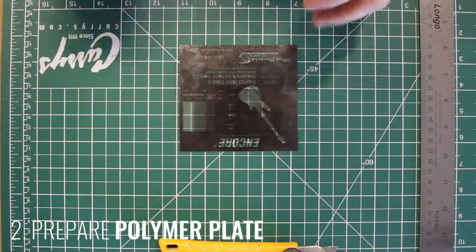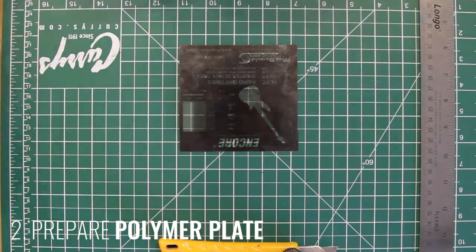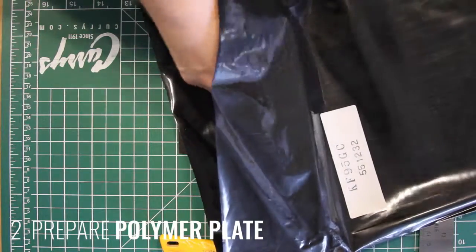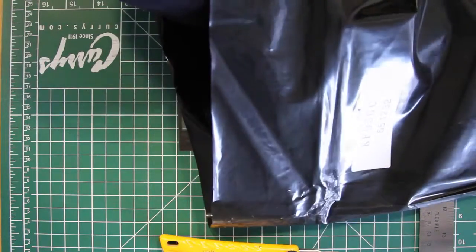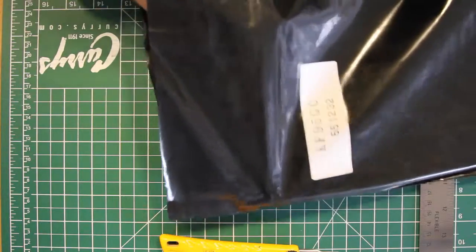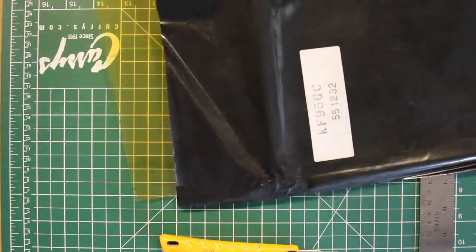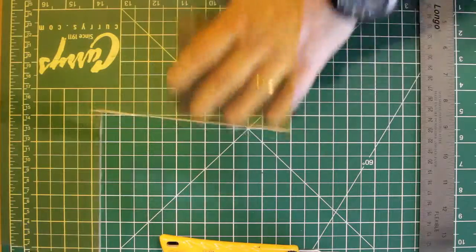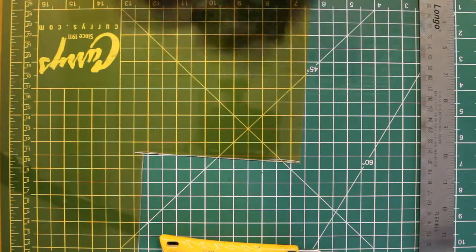So at this point we want to take the polymer plate material out of the black bag. This is light sensitive material so turning off the lights beforehand, dimming the shades is a good practice. It's not light sensitive to the point where we need to work in a dark room but just work with dim light would be preferable.